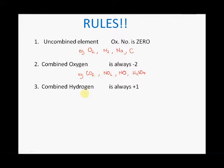Rule three: combined hydrogen is always plus one. An example of this would be acids — hydrochloric acid HCl, and water H₂O, where the oxidation number of hydrogen is plus one. The oxidation number for the hydrogen in nitric acid HNO₃ will also be plus one.